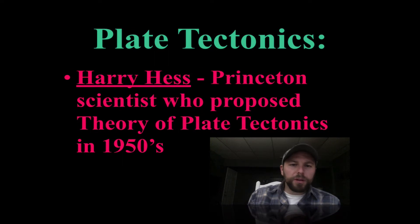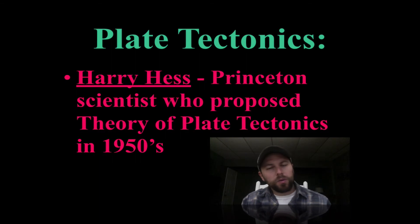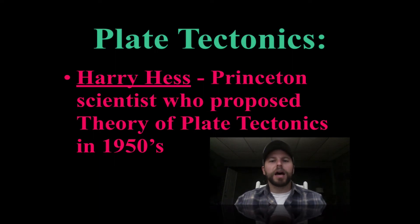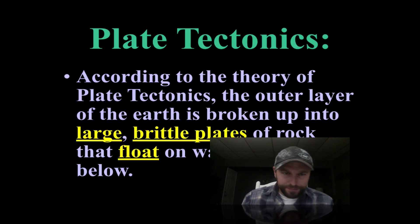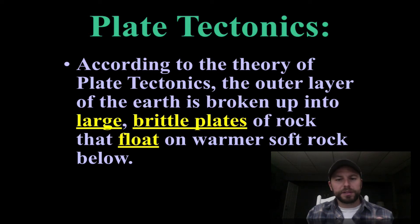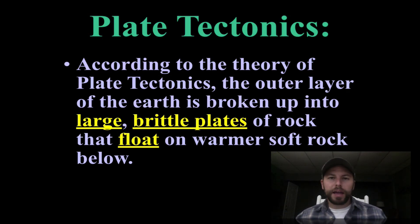Moving on, Harry Hess proposed the theory of plate tectonics. Previously the idea was that the continents moved, but Harry Hess said it's not just that the continents moved — there's a lot more to it. He took some of the evidence from continental drift and added it into his theory of plate tectonics, where the outer earth is broken up into large plates that float on top of softer rock that helps them move about.